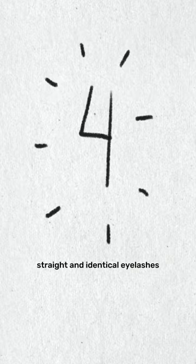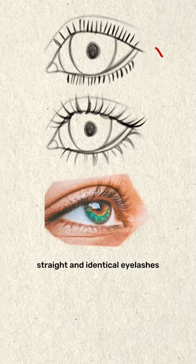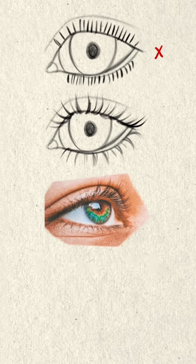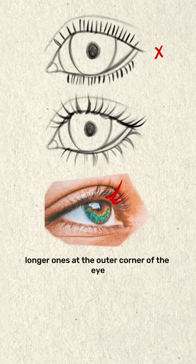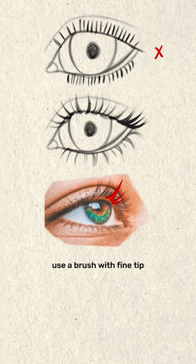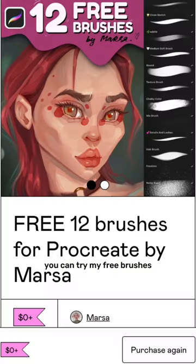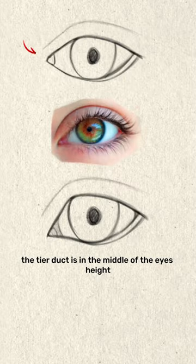Fourth, straight and identical eyelashes — try to draw curved eyelashes with longer ones at the outer corner of the eye. Use a brush with a fine tip. You can try my free brushes — link in my bio.